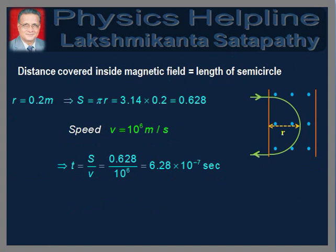For the second part of the question, the distance covered by the particle inside the magnetic field is equal to the length of the semicircular path. Therefore, s = πr = 0.628 meters. The speed of the particle is 10⁶ meters per second. Therefore, the time spent inside the magnetic field is t = 0.628 / 10⁶ = 6.28 × 10⁻⁷ seconds. This is the answer to the second part of the question.